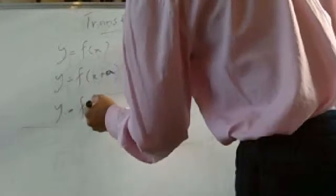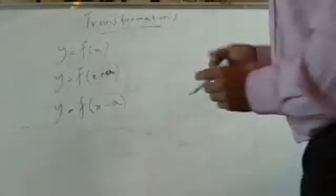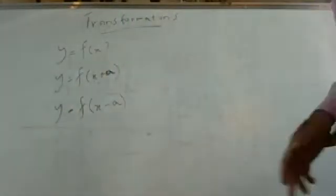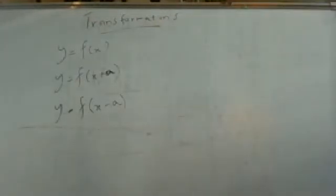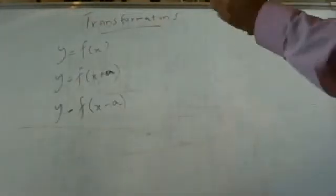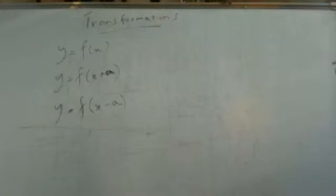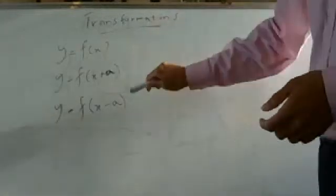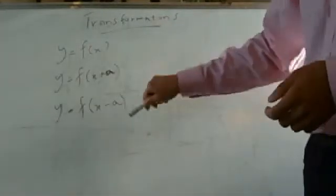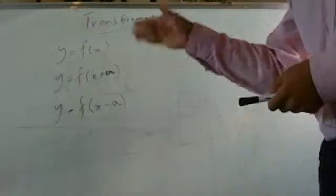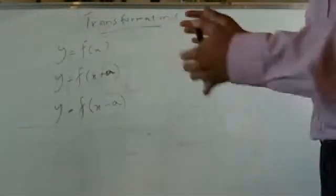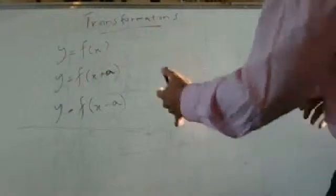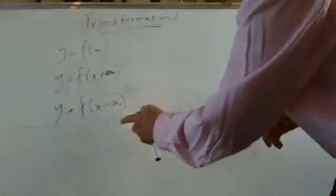Now if I change that to y equals f(x − a), what's going to happen is all the x-coordinates are going to move to the right a units. So if it was minus 2, that means they move to the right 2 units. While this is plus a and minus a, nothing will change in the y-coordinates. The y-coordinates stay the same — it's only the x-coordinate which changes, to the left or to the right.